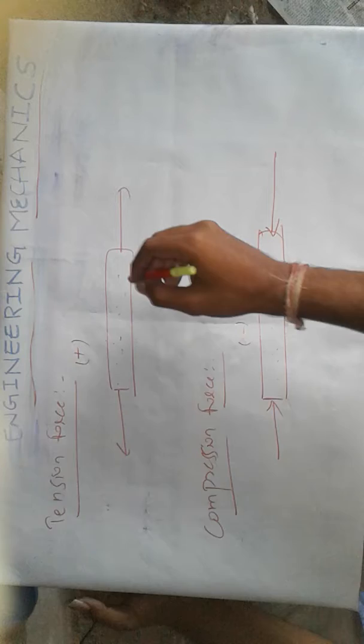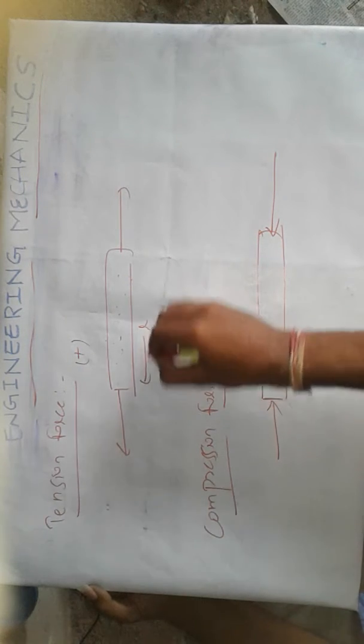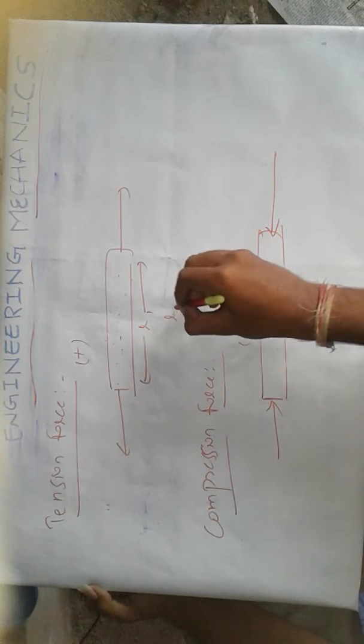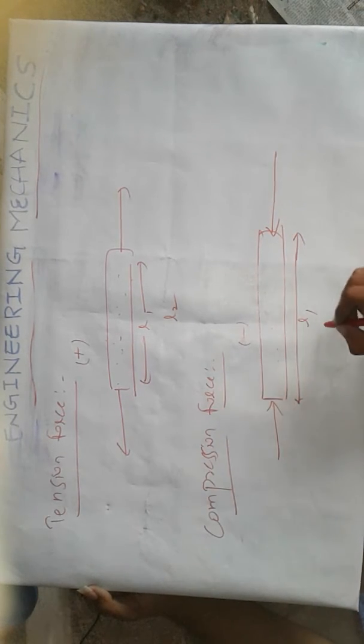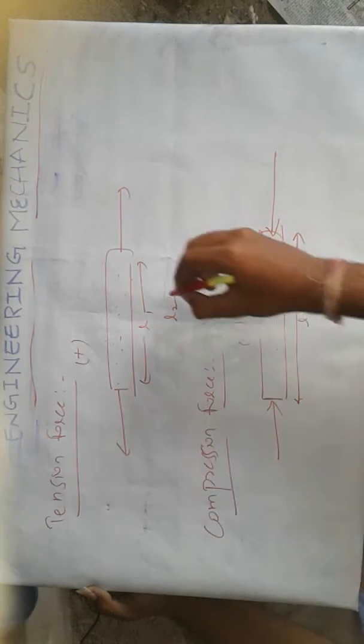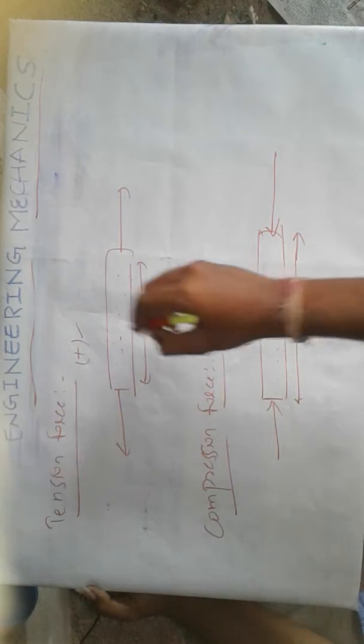Positive direction means if we suppose the initial length is L1 and it is increased to L2, there is an increment, therefore it is denoted by positive sign.